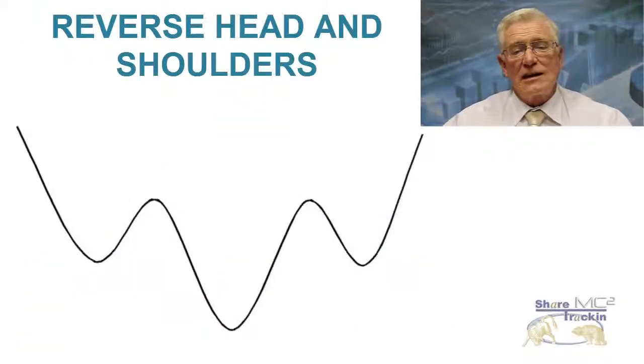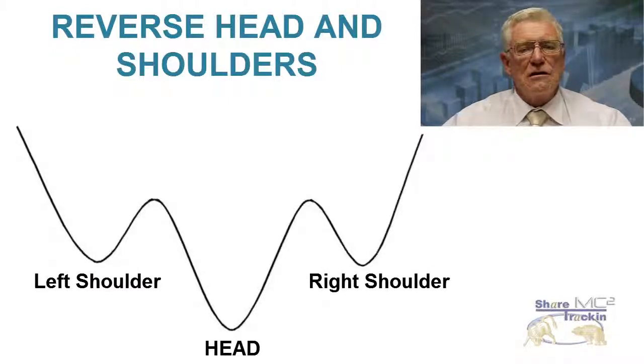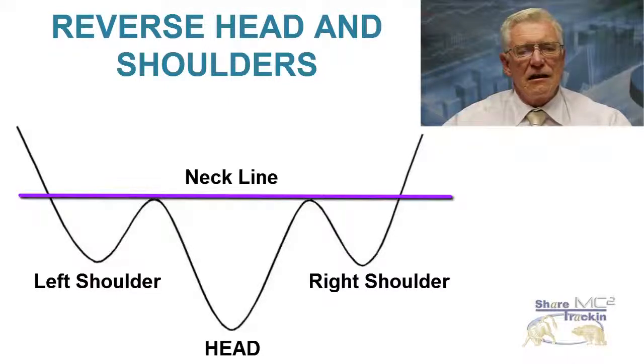You can also get a head and shoulders formation in reverse, an upside down head and shoulders formation. Here you can see that the head and the right shoulder are upside down and there is the neckline. When the neckline is broken you can expect a strong upward move. A reverse head and shoulders formation is considered to be very bullish.